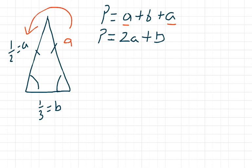Now I can start substituting my constants from my variables. There is no constant for P, so I just drag it down. I substitute A for one-half and B for one-third.